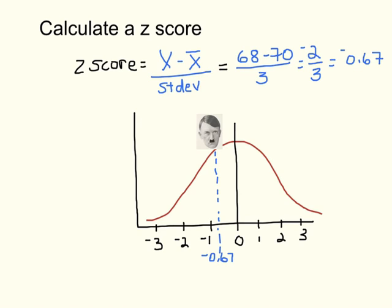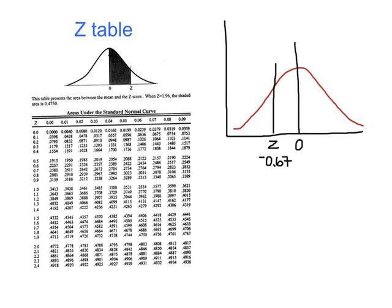Now we want to know what proportion of men's heights are higher than Hitler's — the probability of a score falling in that part of the distribution. Nowadays you would simply use a computer and it would give you the probability automatically. You can also look in a z-table, which tells you the percent of the distribution that falls either above or below your z-score.